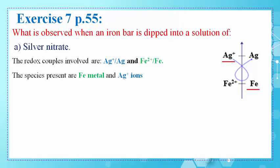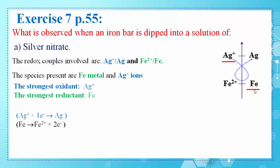The species present in this reaction are Fe metal, which is the iron bar, and Ag+ ions in the silver nitrate solution. As we can see on this axis, Ag+ is the strongest oxidizing agent or the strongest oxidant, and Fe is the strongest reductant or reducing agent. According to gamma rule, a reaction takes place between the strongest oxidant, which is Ag+, and the strongest reductant, which is Fe.